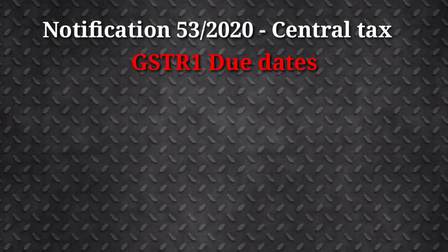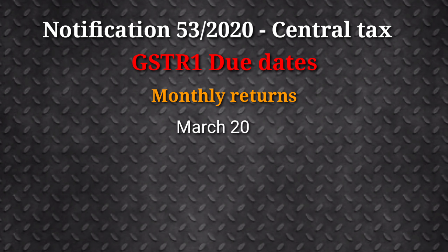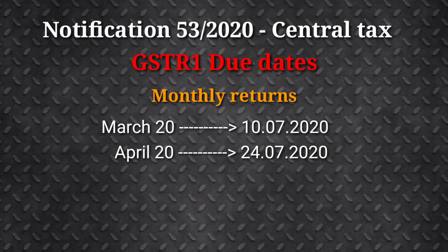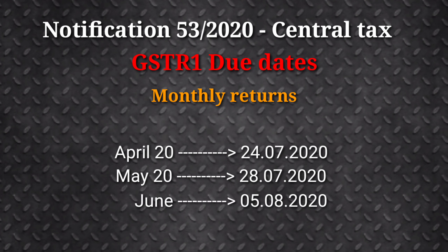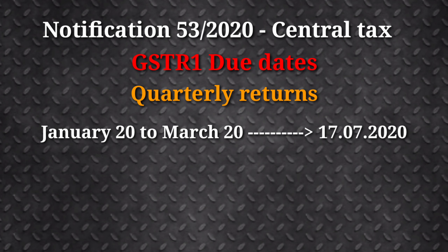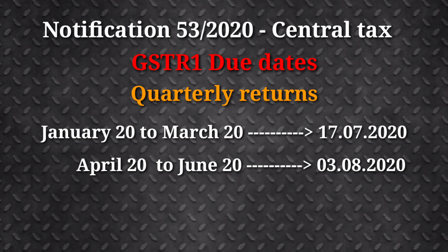Notification 53 deals with the due dates of GSTR 1. For monthly returns, the due dates are: March — 10th July 2020, April — 24th July, May — 28th July, June — 5th August. For quarterly returns, the period January to March 2020 is due on 17th July 2020, and the period April to June 2020 is due on 3rd August 2020.